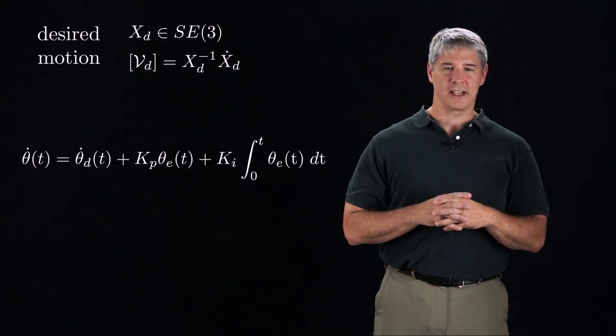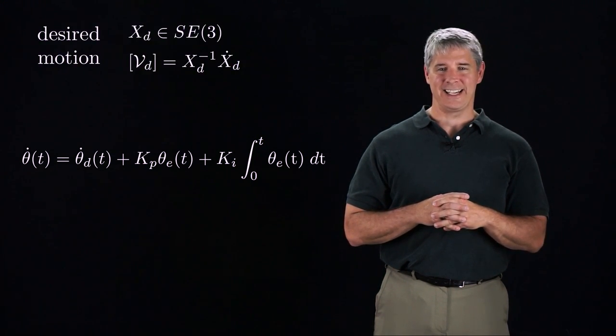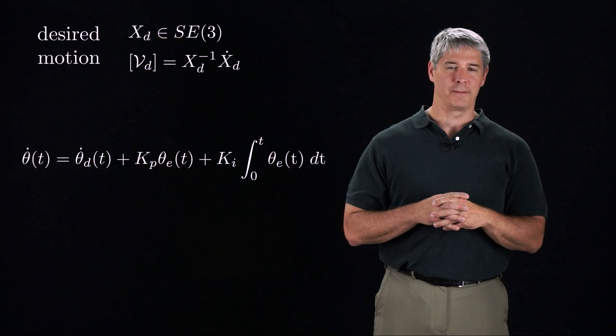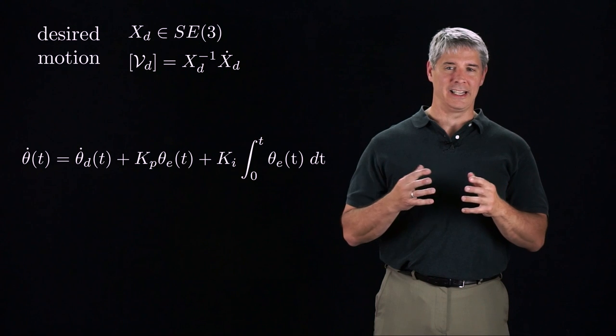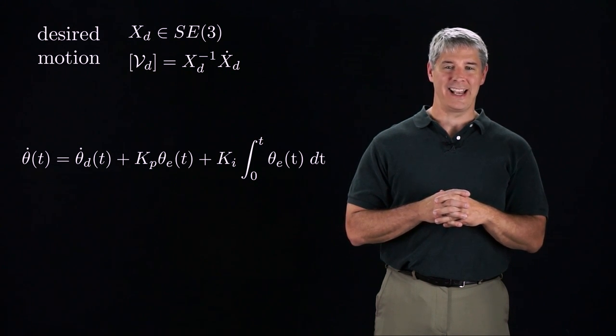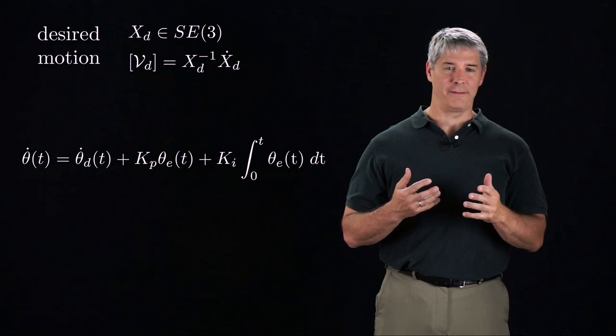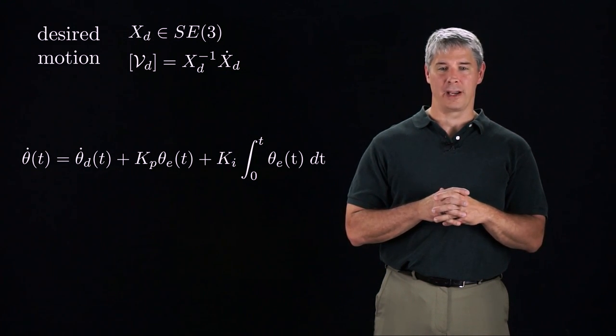Now consider the case where the desired motion is expressed as XD, the desired SE3 configuration of the end effector as a function of time. The corresponding twist Vd at any instant of time is XD inverse times XD dot, which is the twist of the end effector expressed in the desired frame of the end effector.